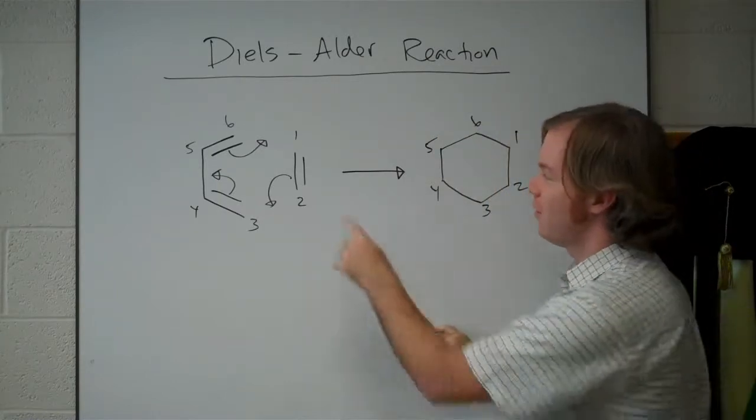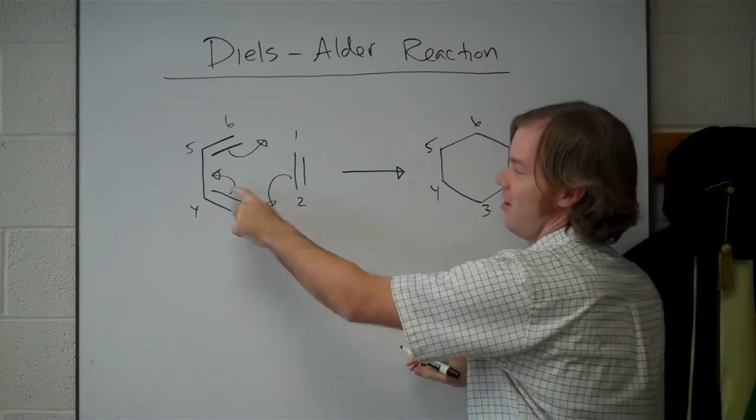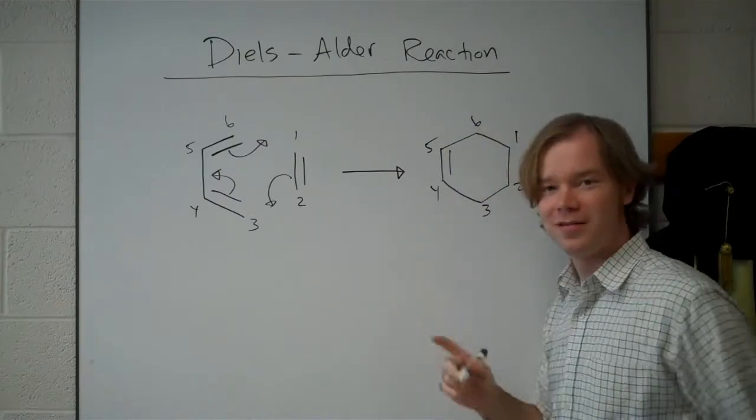So we have a new bond here between one and six, a new bond between two and three, and an arrow ends up here between five and four. That's where we put our double bond.